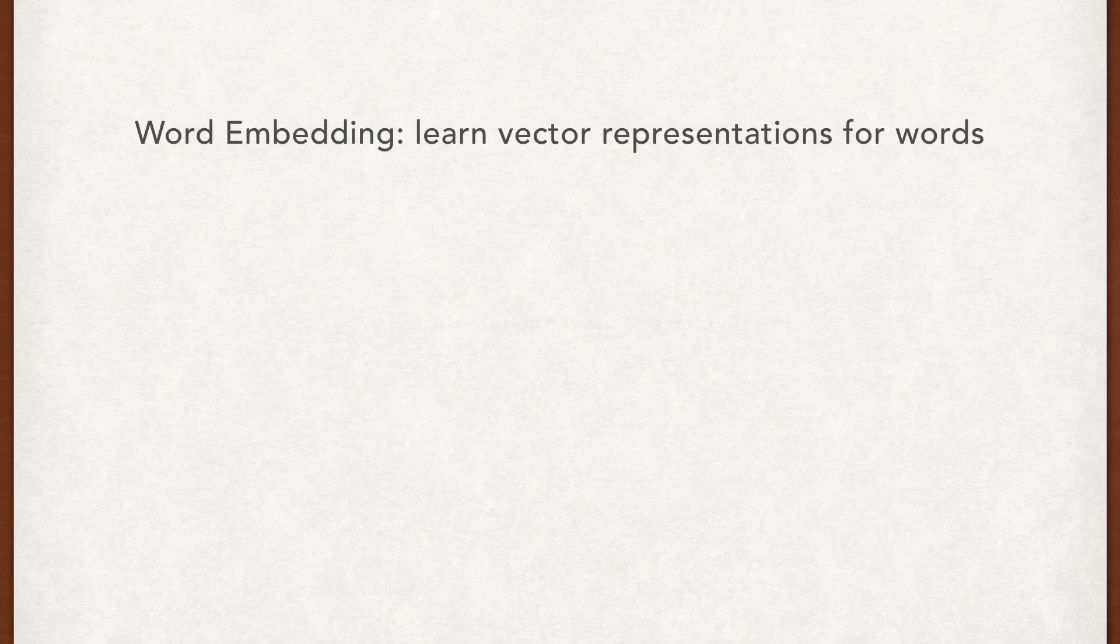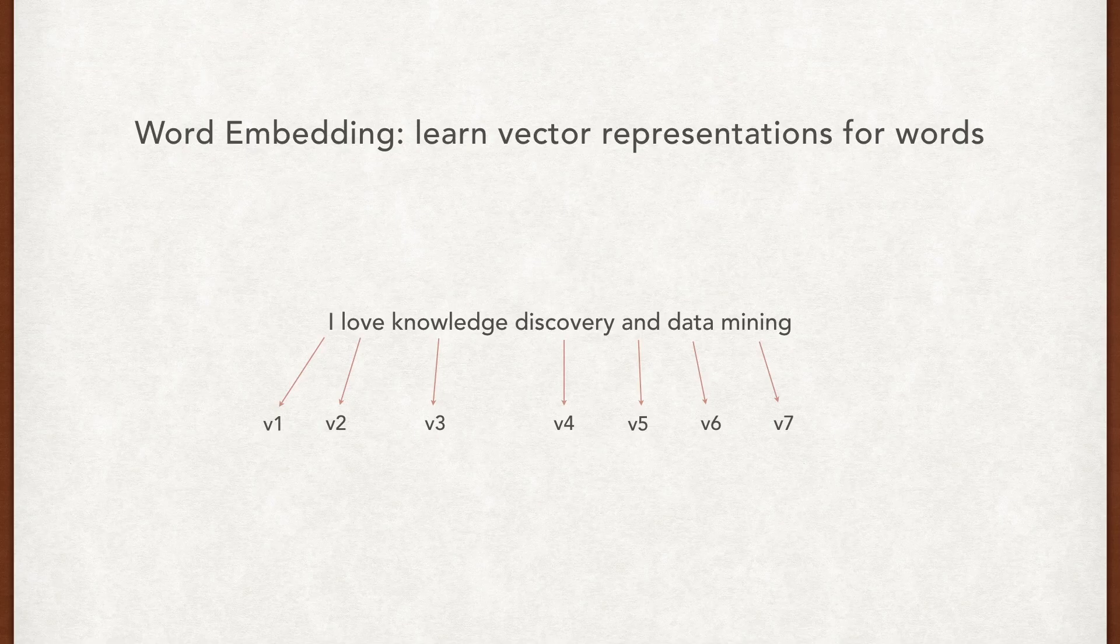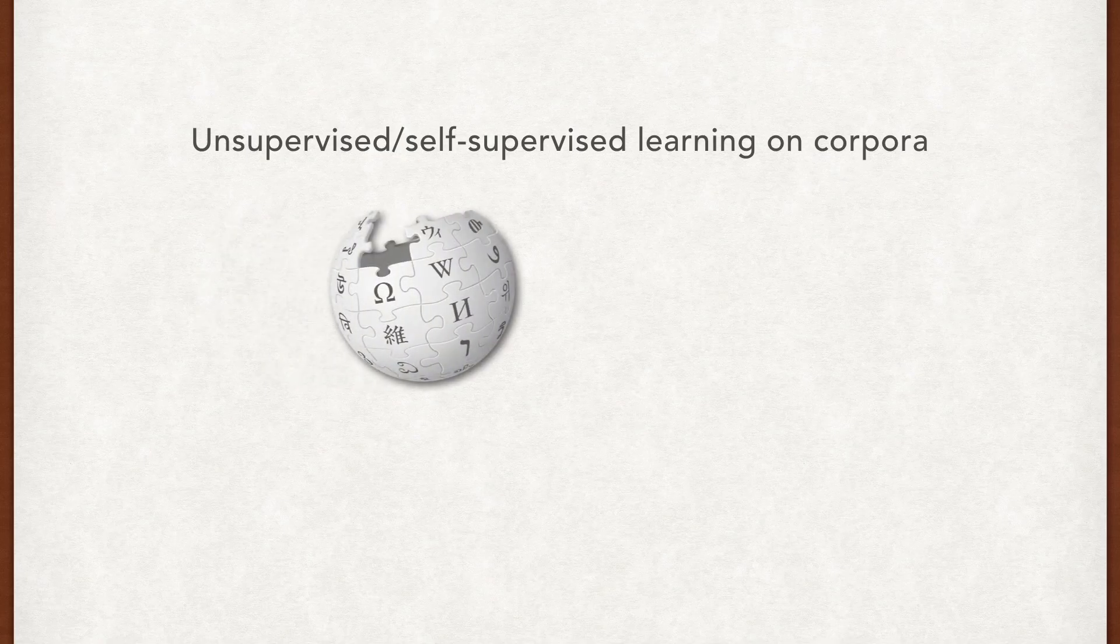A typical word embedding process associates each word with a real valued vector, such that words with similar meanings are close to each other in the embedding space. Word embedding is usually trained in an unsupervised fashion on large corpora.